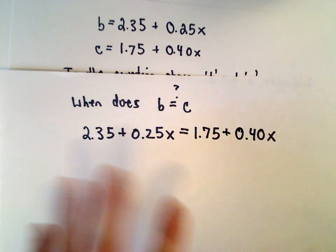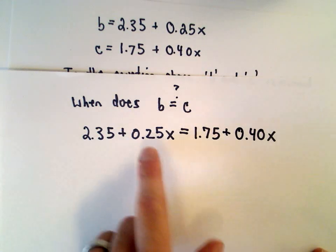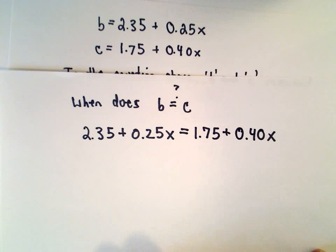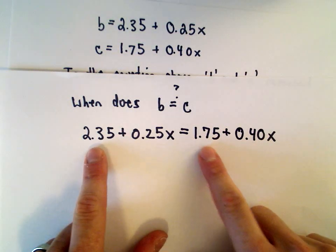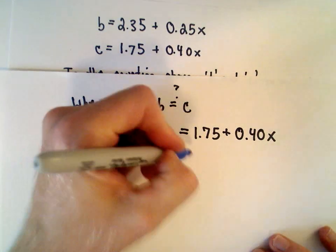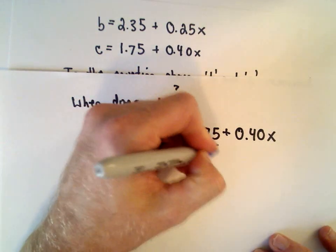Okay, so the first thing I'm going to do - I'm trying to get all my constants on one side and all my x's on the other. So I look at my constants, 2.35 and 1.75. I always subtract away the smaller value, so I'm going to subtract 1.75 from both sides.